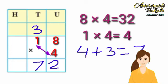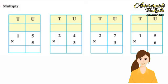15 multiply by 5 is equal to 75. 24 multiply by 3 is equal to 72. 27 multiply by 3 is equal to 71. 15 multiply by 6 is equal to 90.